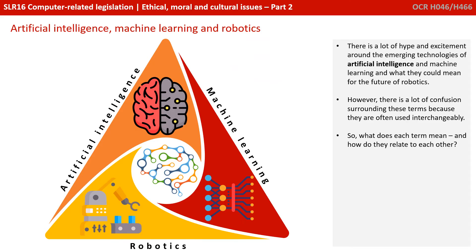There was a lot of hype and excitement around the emerging technologies of artificial intelligence and machine learning and what they could mean for the future of robotics. However, there's a lot of confusion surrounding these terms because they're often used interchangeably. So what does each term mean and how do they relate to each other?